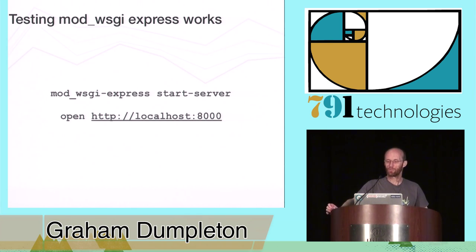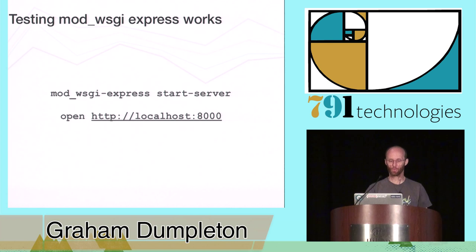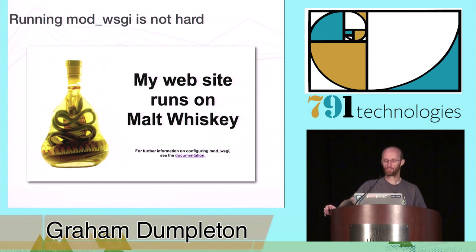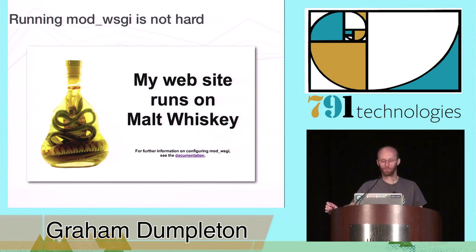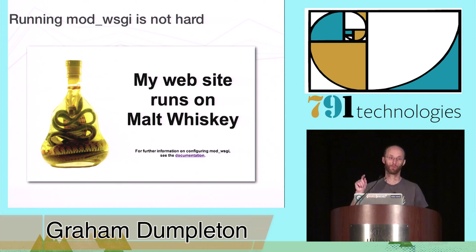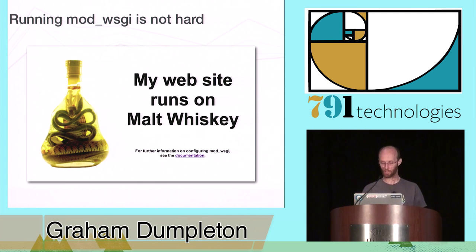Once installed, we can test that the package was installed correctly and that Apache can start up properly. For this, we run the mod_wsgi Express command and give it the start-server command. Normally we would provide an additional argument with the WSGI script file, but we leave that off here because I just want to test the installation works. In a separate window, we can open up the browser and the URL for the instance of Apache mod_wsgi we've just started. What we should get is a helpful splash screen so you know it is working okay. To run it with an actual WSGI application, you can supply the path to the WSGI script file. You can also use the --help option to get information on all command line options in case you want to change the listener port or specify a directory of static assets. For high-level information on mod_wsgi Express, go look at PyPI and you'll find some information there.